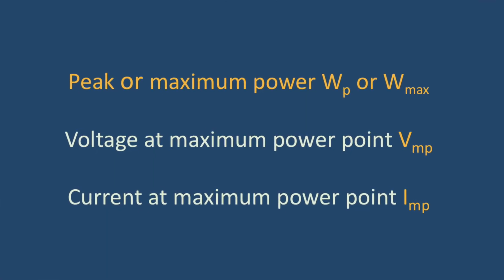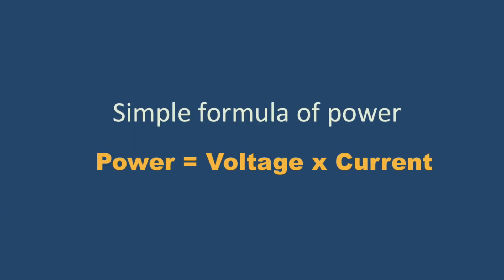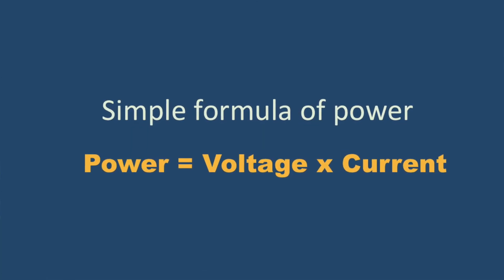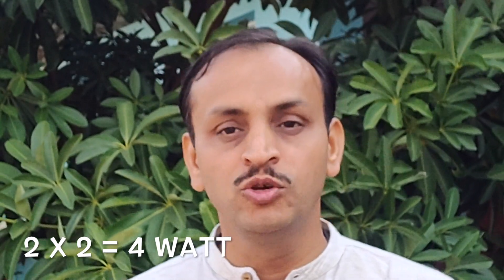When it comes to power, two parameters are also important: voltage and current. Corresponding to the maximum power, there is a maximum voltage and a maximum current. A very simple formula to learn is: when you multiply voltage by current, you get power. For example, if your voltage is 2 volts and your current is 2 amperes, power equals 2 multiplied by 2, which is 4 watts.